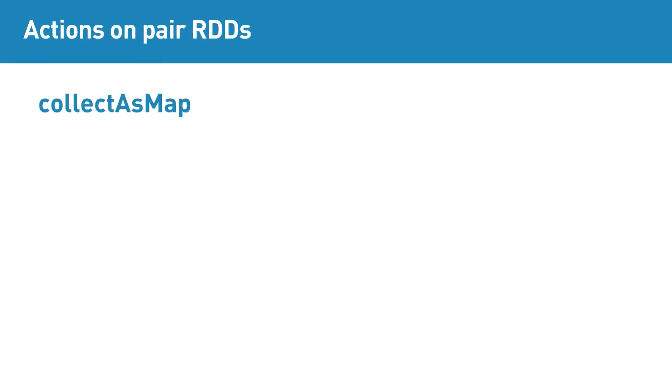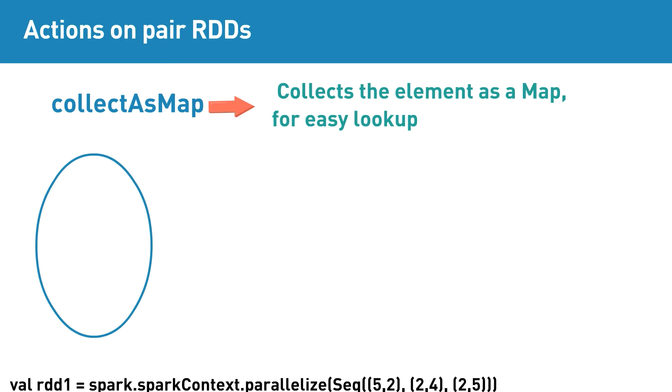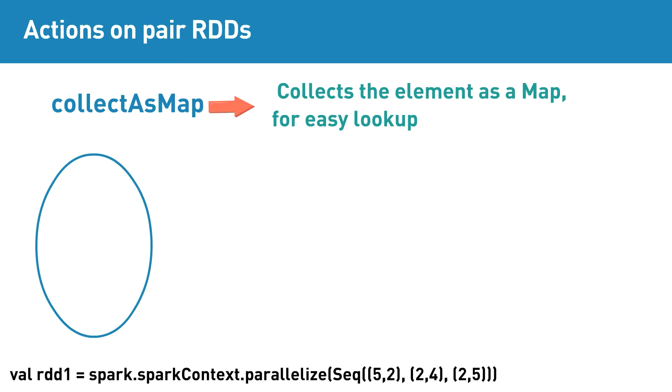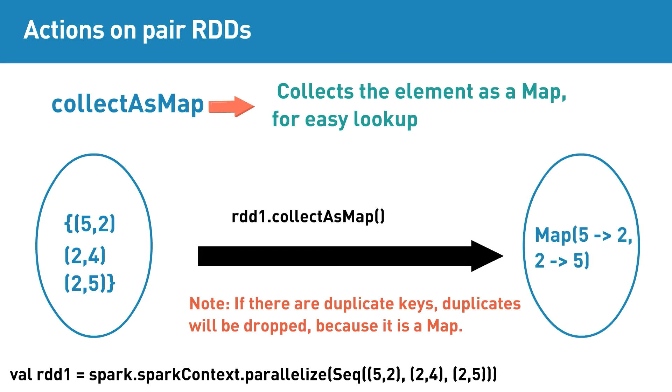Collect as map is a pair RDD action that collects the element as a map for easy lookup. As an example, if input RDD contains elements [5,2], [2,4], [2,5], then applying collect as map action will return map 2 to 5, 5 to 2.